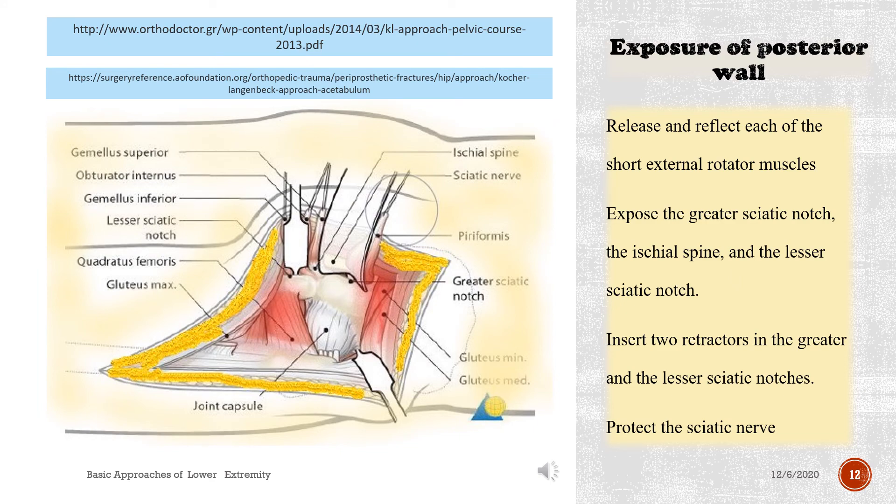Exposure of posterior wall: release and reflect each of the short external rotator muscles. Expose the greater sciatic notch, the ischial spine, and the lesser sciatic notch. Insert two retractors in the greater and the lesser sciatic notches. Protect the sciatic nerve.